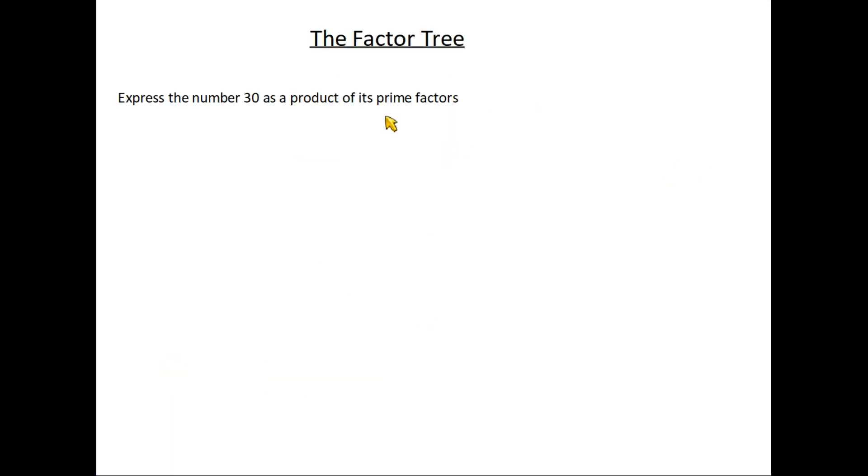Now I want to have a look at something called the factor tree, and it's best done by looking at a very typical and also very common question that we see on the GCSE exam papers. And it will say something like express the number 30 as a product of its prime factors. It's also known as prime factorization. So what are we talking about?